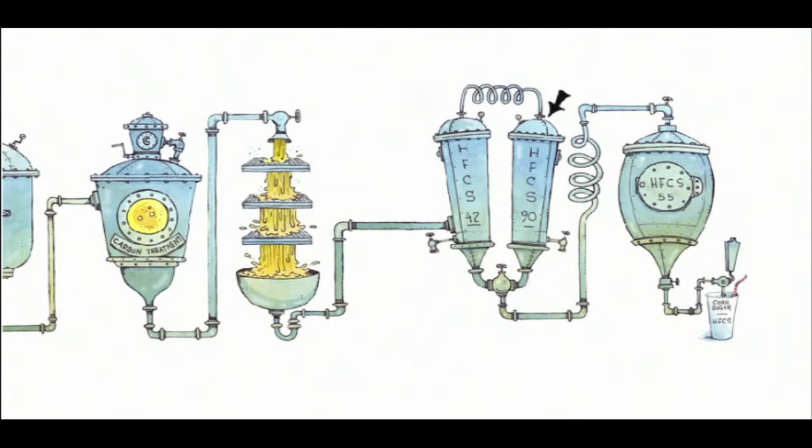Finally, the two liquids, HFCS 42 and HFCS 90, are blended to make a mixture that is 55% fructose. The final blend, called HFCS 55, is widely used as a sweetener in sodas.